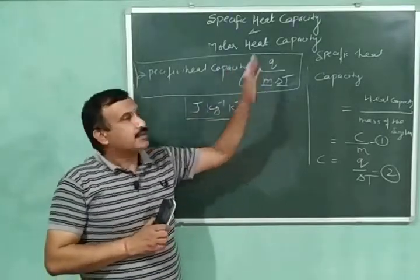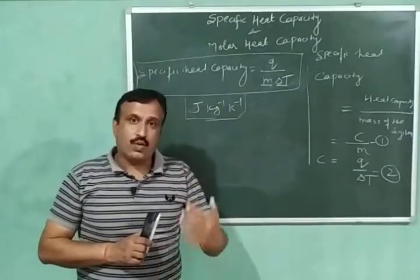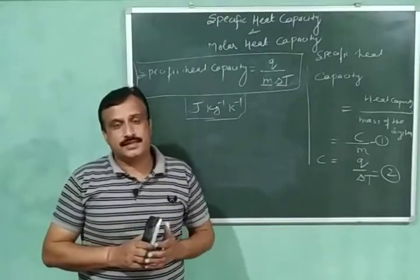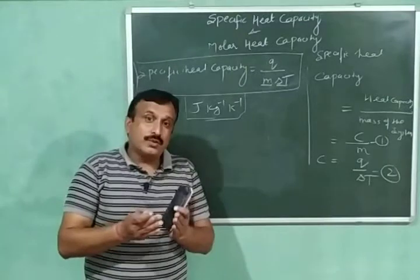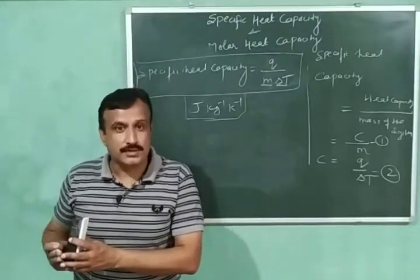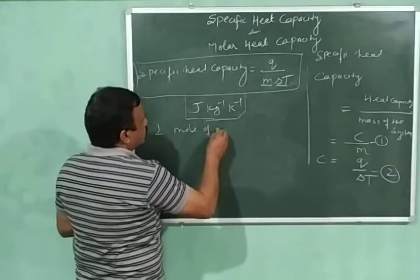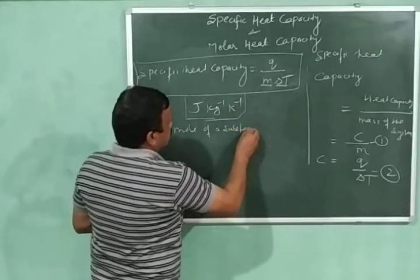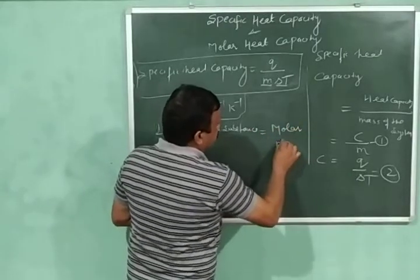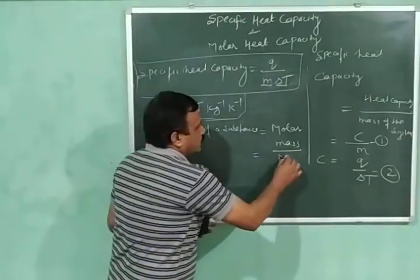Now let us discuss molar heat capacity. Molar heat capacity is the amount of heat required to increase the temperature of 1 mole of a substance through 1 degree Celsius. And what is 1 mole of a substance? 1 mole of a substance is equal to its molar mass or molecular mass. Let the molar mass of a substance be M grams.